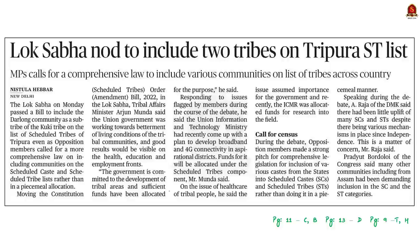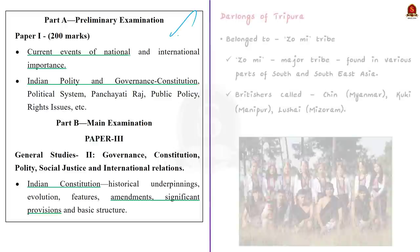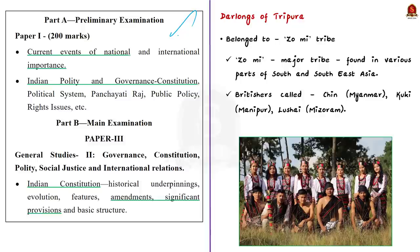Now let us take up this news article. It talks about a bill passed by the Lok Sabha which aims to amend the list of scheduled tribes of Tripura. This bill is called the Constitution Scheduled Tribes Order Second Amendment Bill of 2022, and it aims to include the Darlong community as a sub-tribe of the Kuki tribe in the list of scheduled tribes of Tripura. Today we will cover a few facts about the Darlong community and also see the procedure to amend the scheduled tribes list.